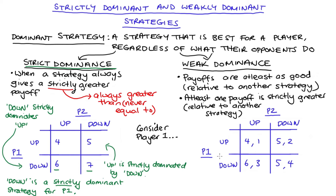Now let's check the game on the right-hand side, again focusing on player one's best responses. If player two plays up, player one could go up and get four or down and get six — six is bigger, so player one's best response is to play down. If player two plays down, player one could go up and get five or down and get five. In this case player one has two best responses — either up or down gives an equal payoff. Player one still has a dominant strategy of down, because regardless of player two's actions it is better or equal to go down, and playing up risks getting only four.